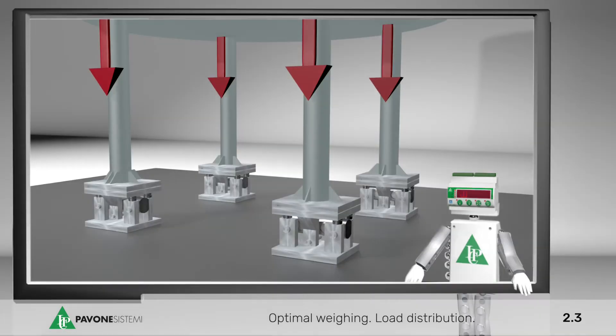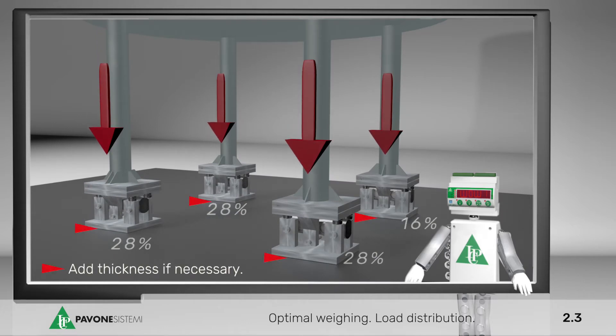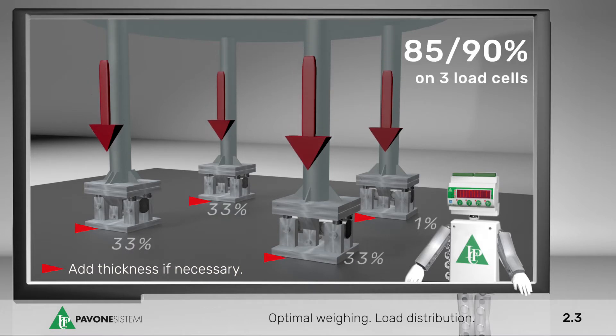Load Distribution. In case of weighing a structure with 4 supports, consider that the load will not be uniformly distributed and that 85-90% of the applied load will be distributed on just 3 supports.